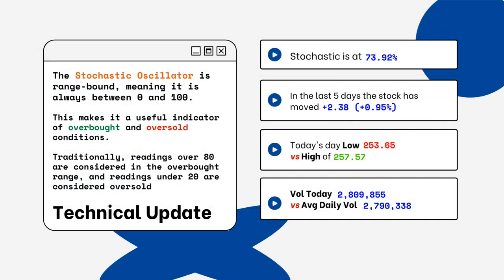You can see on the right side where the stochastic level is on this particular stock. This is a technical update — you want to look for overbought and oversold conditions. Readings over 80% are considered overbought, and readings below 20% are considered oversold. You want to be aware of this when looking at a particular stock.